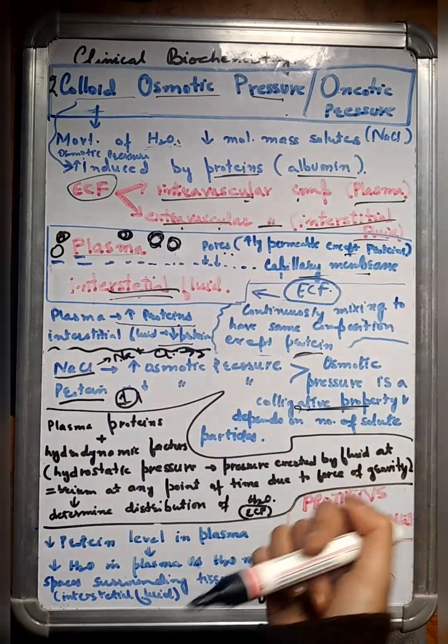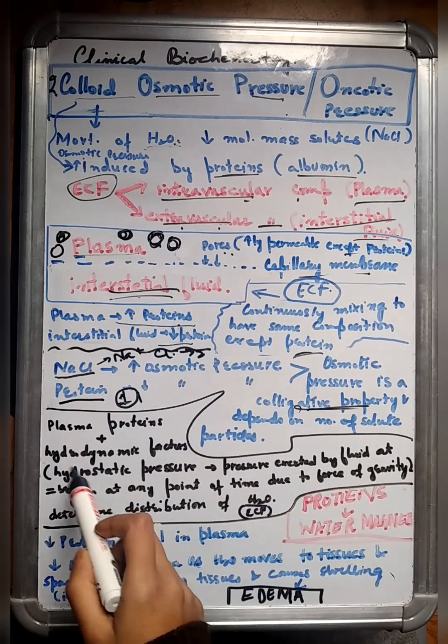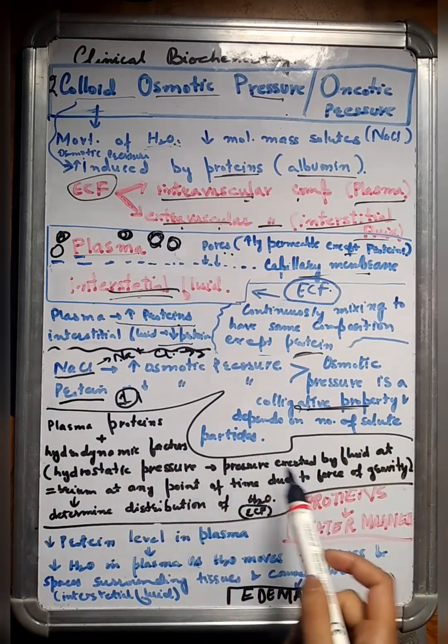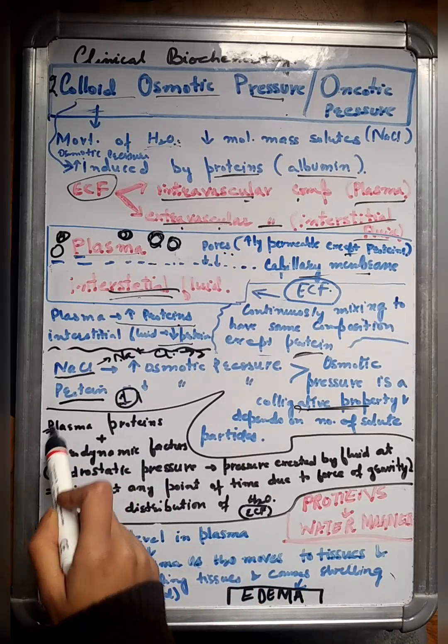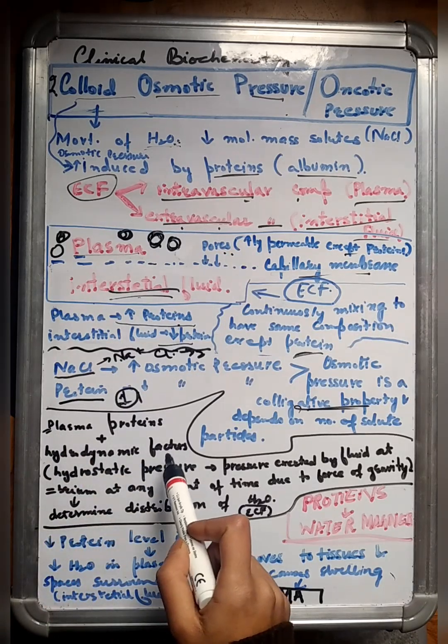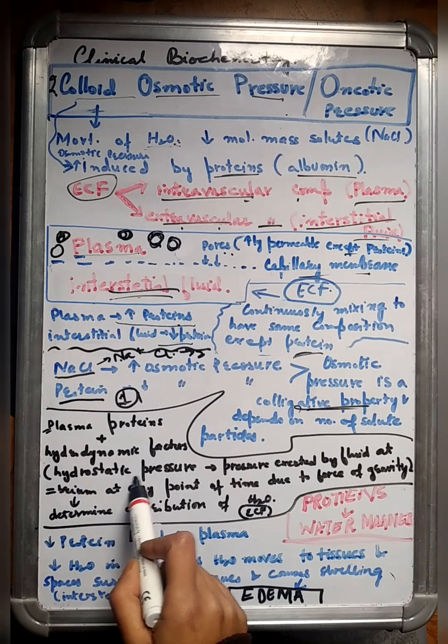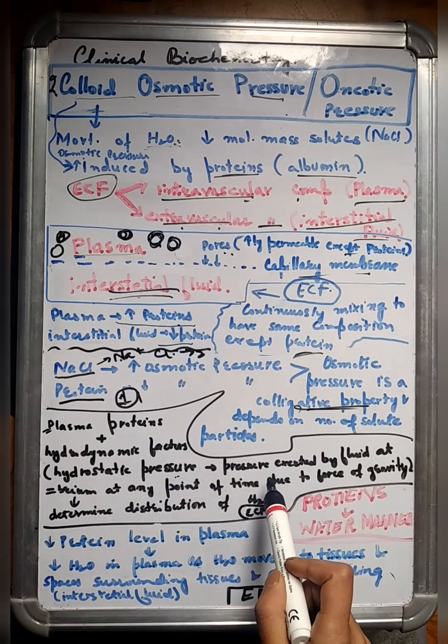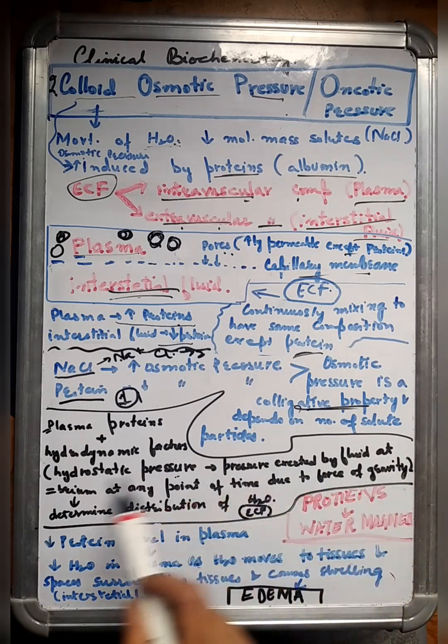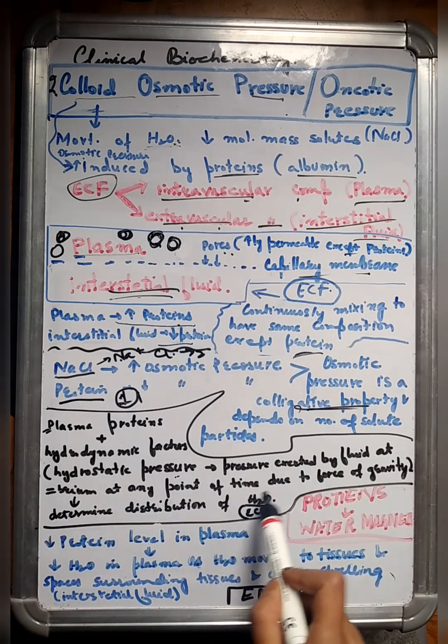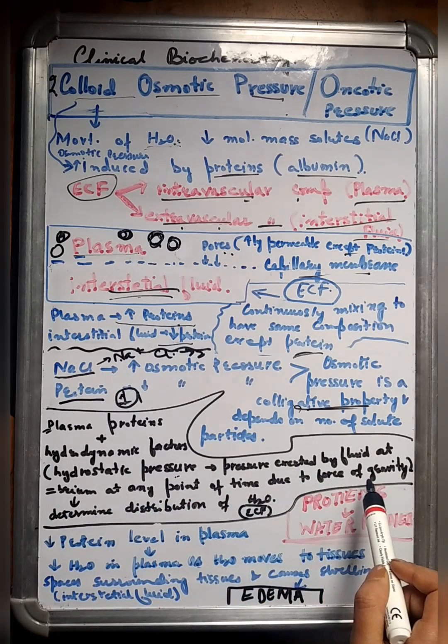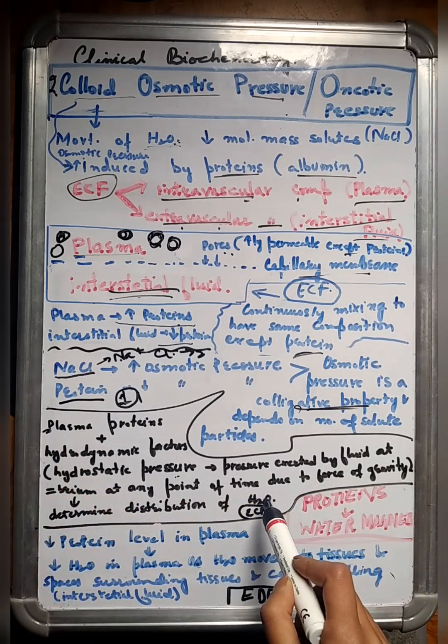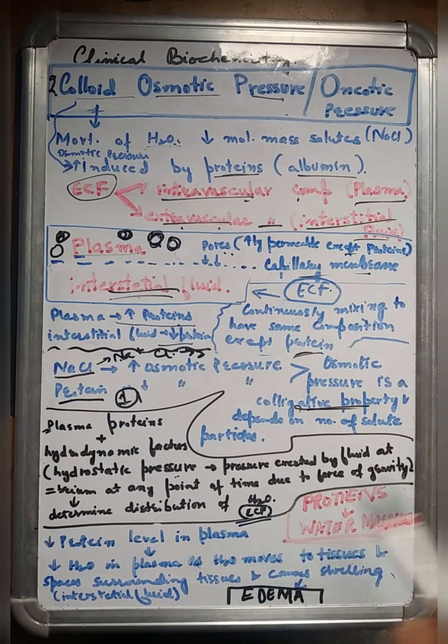All that we have discussed comes to this: the distribution of water between the ECF depends on plasma proteins and some hydrodynamic factors like hydrostatic pressure. What is this hydrostatic pressure? It's the pressure that's exerted by the fluid at equilibrium at any point in time due to the force of gravity. On these two factors, the whole distribution of water, especially in ECF, depends.